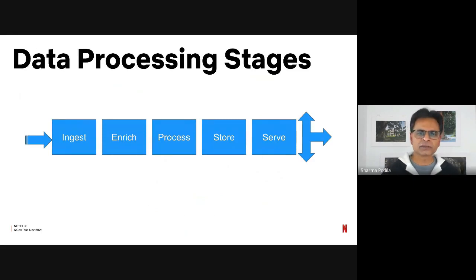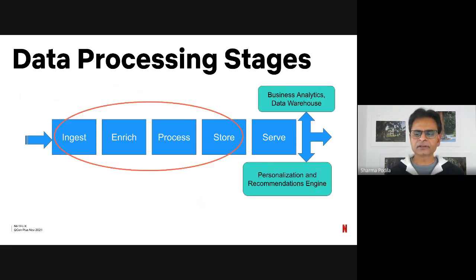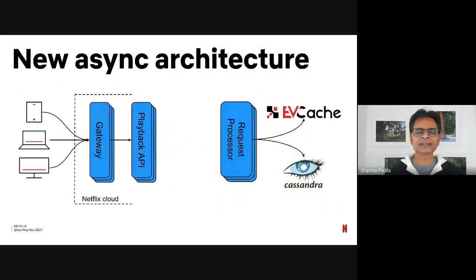If we were to abstract things out, we are following steps that are part of a generic data processing pipeline: ingest, enrich, process, store, and serve. There's business analytics, data warehouse, and personalization and recommendation engines into which we serve this data. The rest of the talk will focus on these layers from ingest to store. So what changes did we make? Between the playback API service and the request processor, we introduced a durable queue. When a request comes in, it's put into the durable queue and immediately acknowledged — there is no need to wait for that request to be processed.